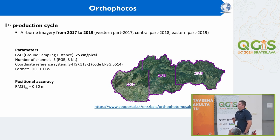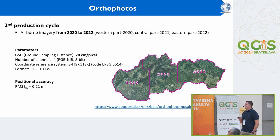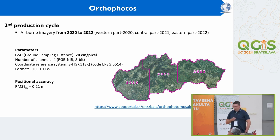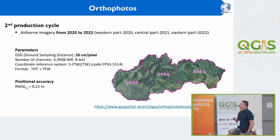Basic parameters of the first cycle: spatial resolution is 25 cm and positional accuracy 13 cm, provided in the national coordinate system as GeoTIFF. The second cycle is similar but has higher resolution, taking place from 2020 to 2022. In that cycle, we also provided rasters with four bands — RGB and infrared — allowing vegetation analysis, and positional accuracy is better.